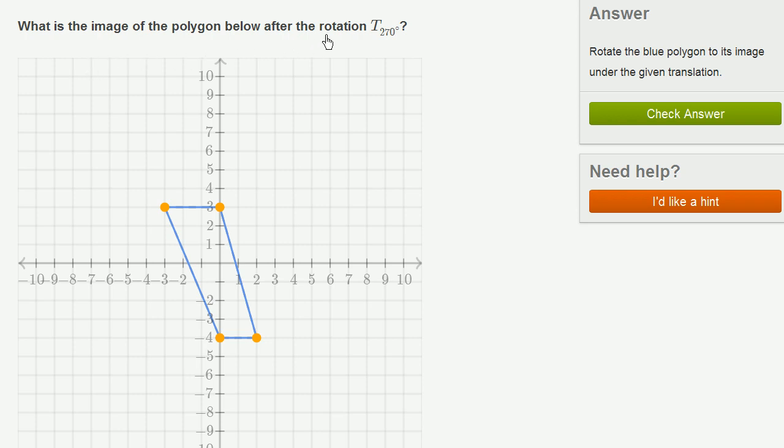What is the image of the polygon below after the rotation? So this is a transformation. It's a rotational transformation of 270 degrees. And when we talk about a rotational transformation, at least in the context of this exercise, we're talking about a rotation around the origin, so around this point.